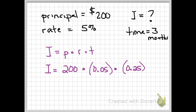So we do 200 times 0.05 times 0.25. How much interest do they make in three months? Two dollars and fifty cents. That's the interest, and if they wanted to know the full balance, it would be $202.50.